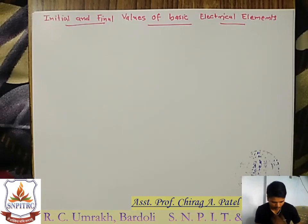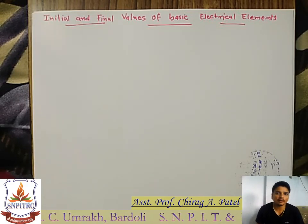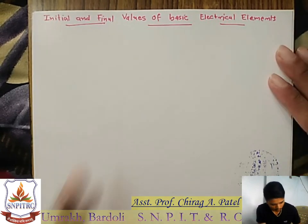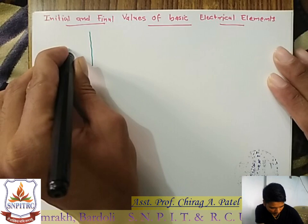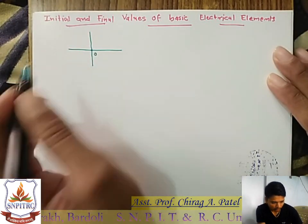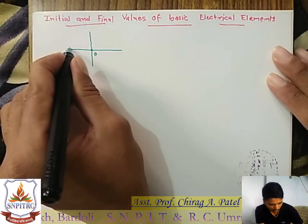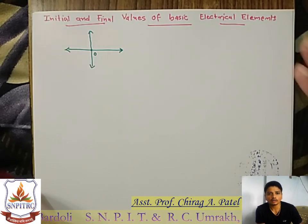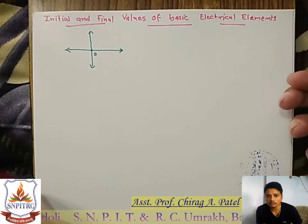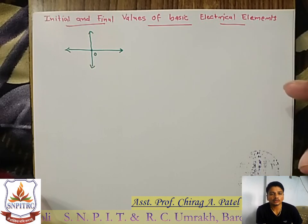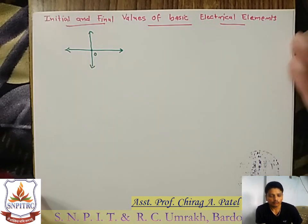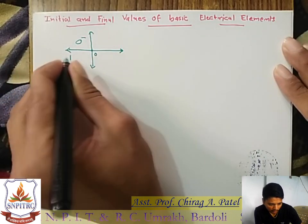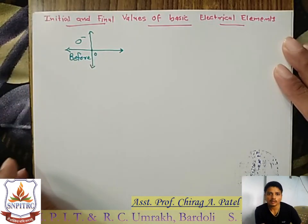Hello everyone. Today's topic is initial and final values of basic electrical elements. Why is it required? I will explain with an example. Consider the time axis — at t=0 we operate some circuit by closing or opening a switch. Before t=0, we call it t=0⁻, which means before operation.